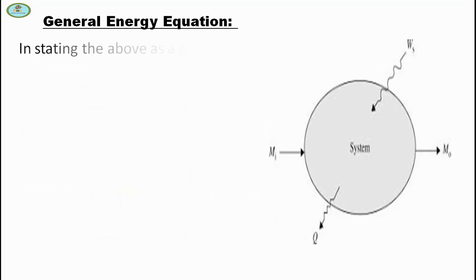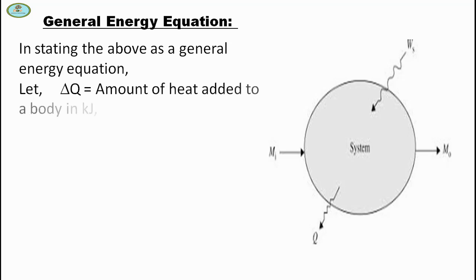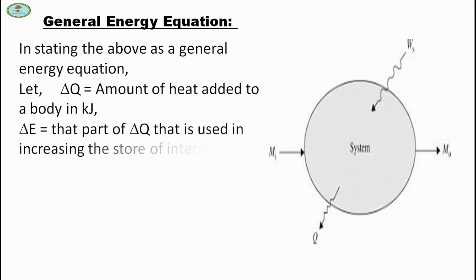In stating the general energy equation, delta Q is the amount of heat added to a body in kilojoules. Delta E is the part of delta Q that is used in increasing internal energy.